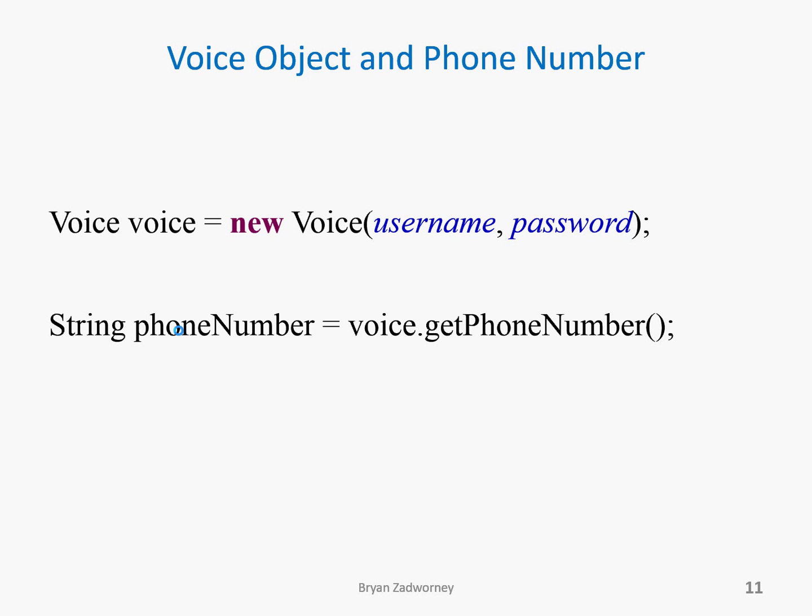The first thing you have to do is create your connection to Google Voice. You do that by creating a Voice object — I called mine 'voice.' From then, you use that voice object to interact with Google Voice. The first thing I wanted to do was figure out what my phone number was and save that in a string. So voice.getPhoneNumber will return a string, which I saved in 'phoneNumber.'